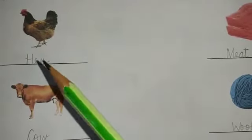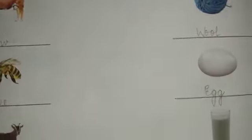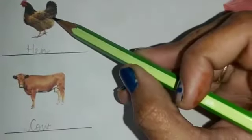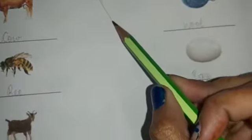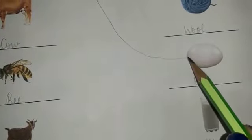Now, we are going to match these animals with the products they give us. Okay. Let's begin with the first one which is hen. Now, what does hen give us? Hens give us egg. So, we are going to match the picture of hen with the picture of egg.